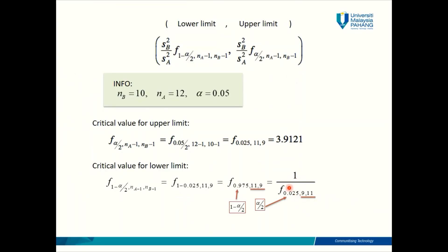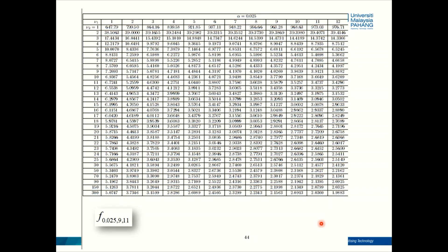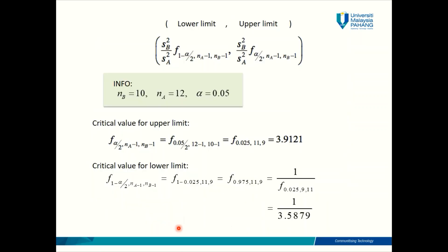Now we need to find F(0.025, 9, 11). Go to the same page with alpha equal to 0.025. Even though it's the same page, we're now looking at different numbers: find 9 at the top row and 11 at the side column. The first number always goes to the top row and the second number goes to the side column. The critical value you get is 3.5879. So our critical value for the lower limit is 1 over 3.5879.